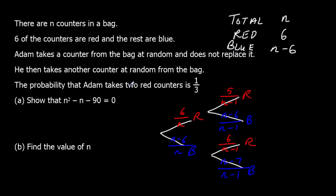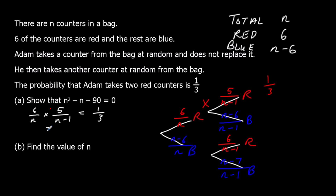The probability of red then red is 1/3, so (6/n) × (5/(n − 1)) = 1/3. Multiplying the fractions: 6 × 5 = 30 on top and n(n − 1) on the bottom, giving 30 / [n(n − 1)] = 1/3.